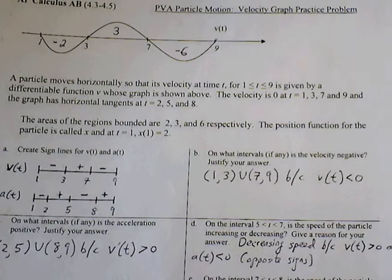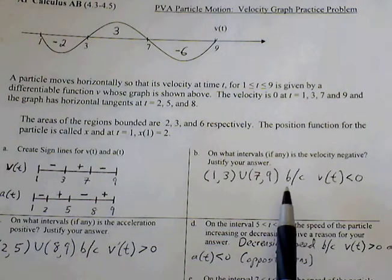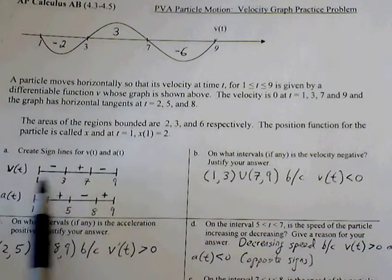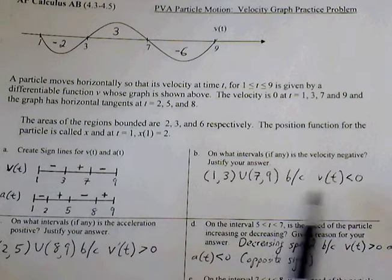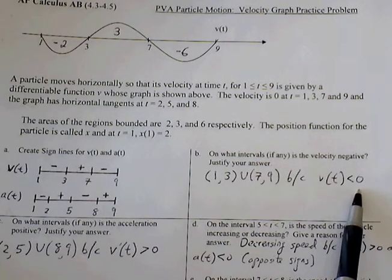For part B, what interval is the velocity negative? Velocity will be negative, we just read the sign line. From 1 to 3 and then from 7 to 9, simply because v of t is less than 0.